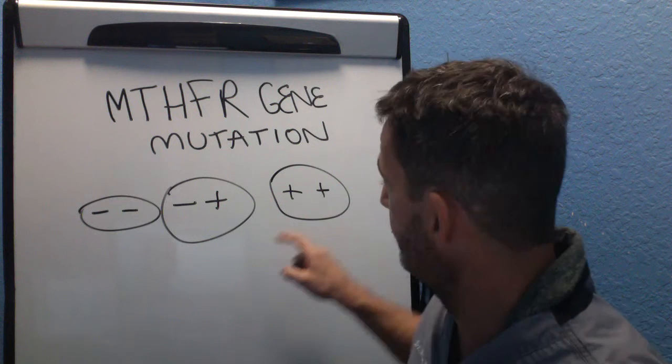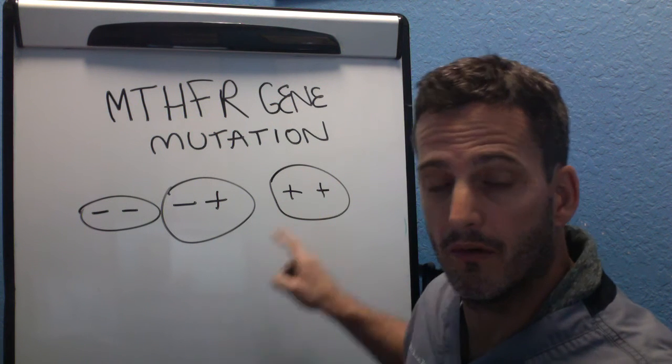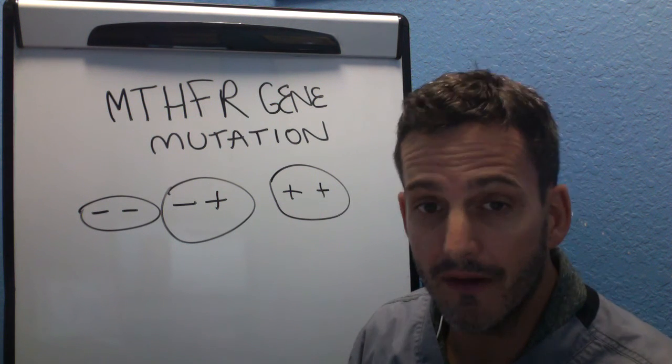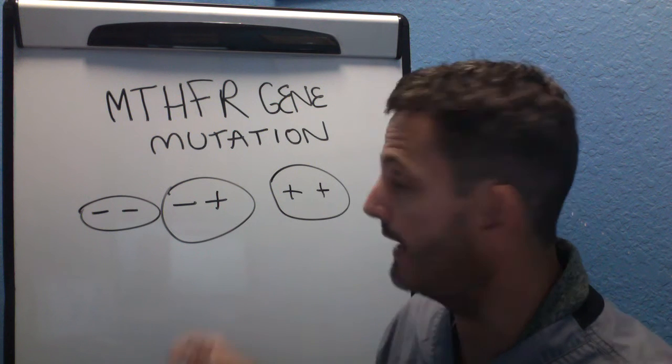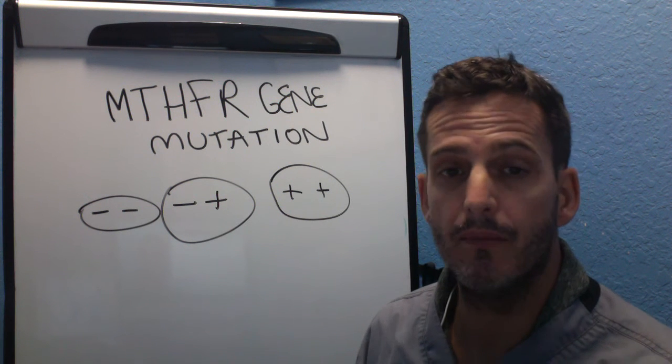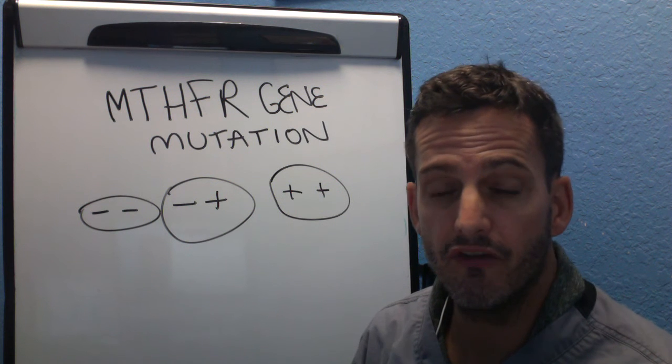And so this means we've inherited two abnormal or non-functioning genes from mom and from dad. So it doesn't mean they're broken. It doesn't mean that they don't work. It just means that they don't work efficiently.